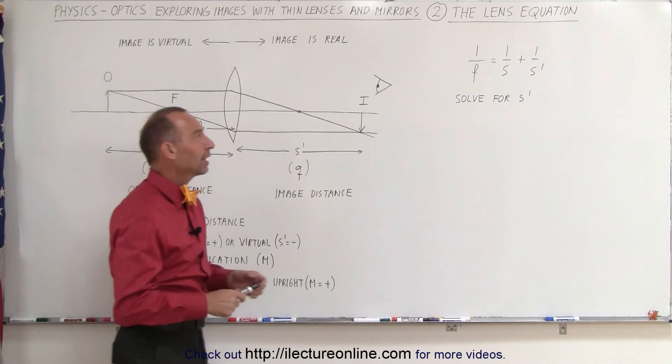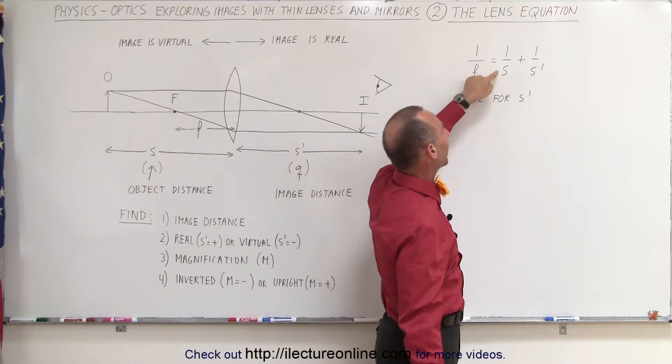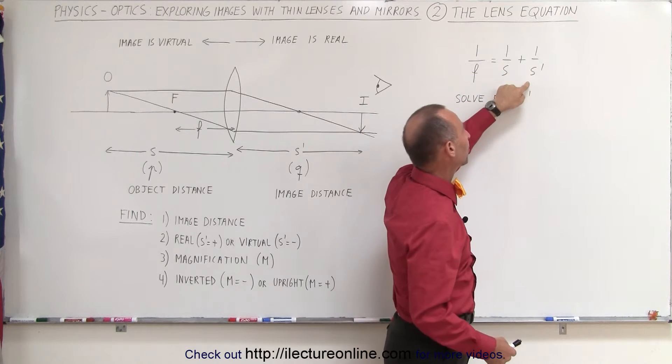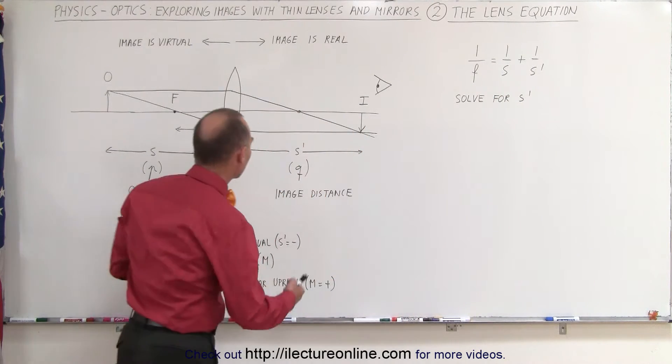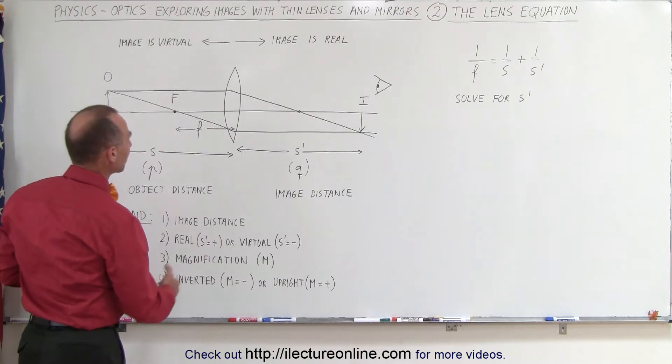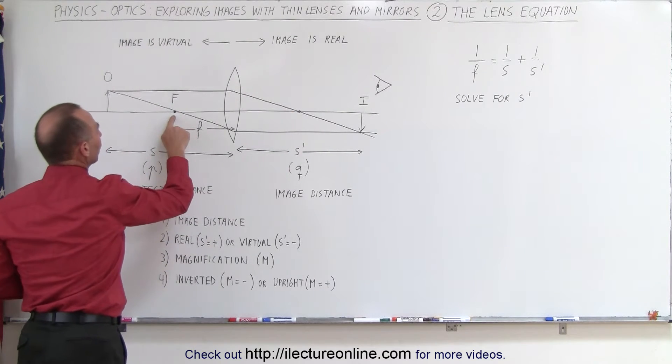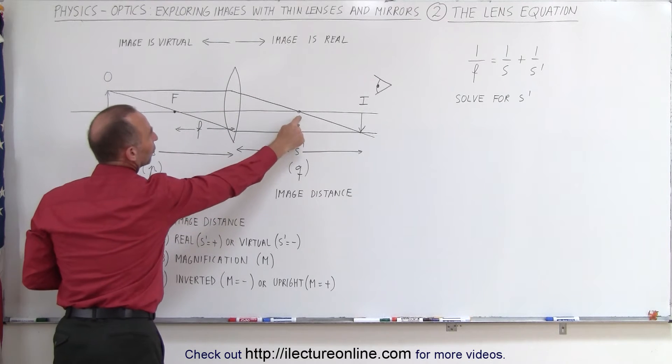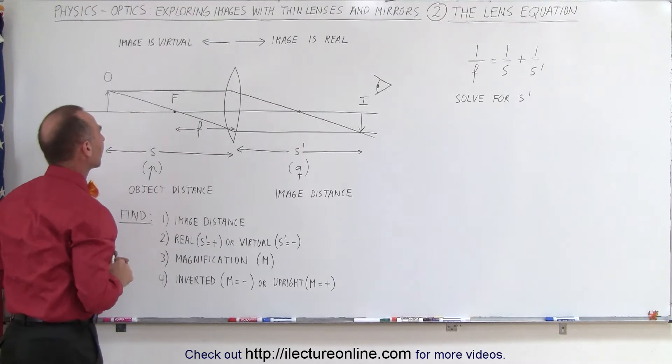Here we have the lens equation in the typical format. 1 over the focal length equals 1 over S, S represents the distance to the object, plus 1 over S' where S' represents the distance to the image. Here we have a graphical representation of that. Here's the lens, we have the optical axis down the middle, there's the focal point on both sides of the lens, of course the real focal point is over here, but this is the mirror image of the focal point on the front side of the lens.